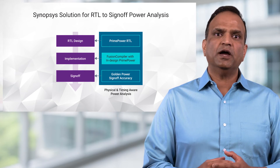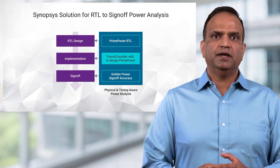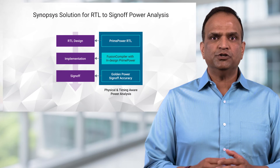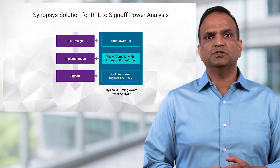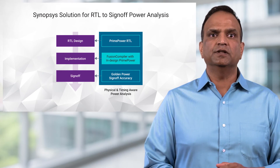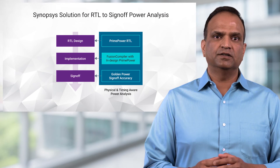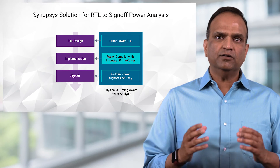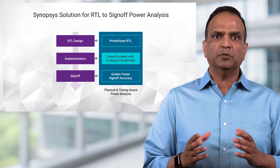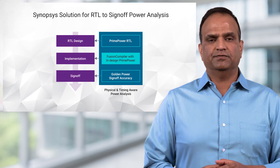Synopsys Fusion Compiler RTL to GDS2 solution enables an in-design flow with PrimePower to ensure that power optimization decisions at each stage of design implementation are made with sign-off quality power results. The end goal is faster convergence, optimal PPA, without late-stage surprises during sign-off.